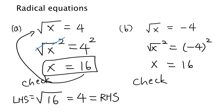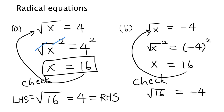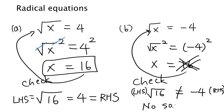Let's check this solution — is this really a solution? If we plug that back into the equation, we have square root of 16 equals negative 4. But square root of 16 is 4, not negative 4. So the left-hand side is not equal to the right-hand side, and this is not really a solution. In fact, there is no solution to this equation at all. Checking the solutions is a really important step because sometimes you come up with a number that is not actually a solution.